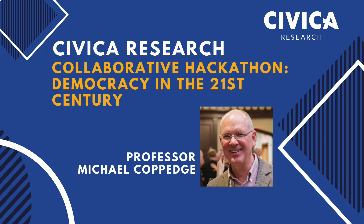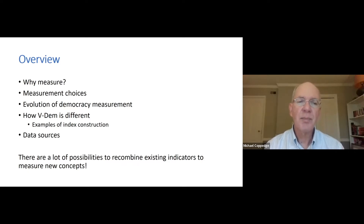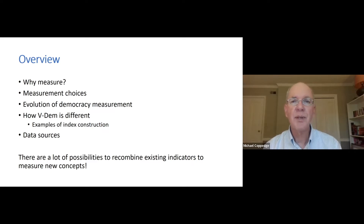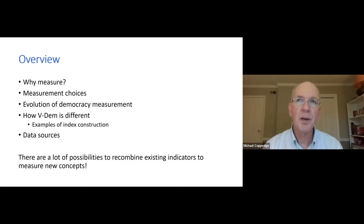Here's the overview of what I want to talk about. First, talk about why measure democracy, then some measurement choices and a little overview of democracy measurement, and then focus on VDEM and how it's different from other projects that measure democracy. I'll give a couple of examples of index construction in VDEM and then talk about various sources of data. The basic theme of this address is that there are a lot of possibilities for participants to recombine existing indicators in order to measure concepts that you find interesting. The possibilities have not been exhausted yet — the world is just opening up and there are many opportunities to measure interesting concepts.